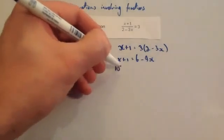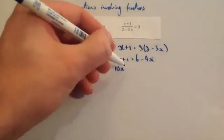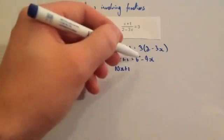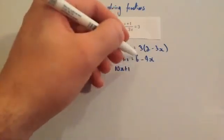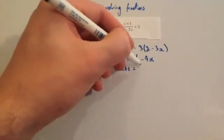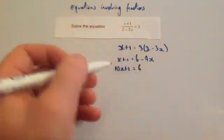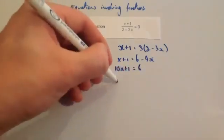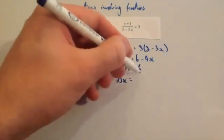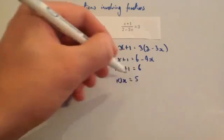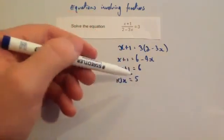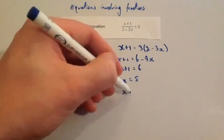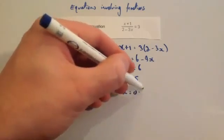You're going to get 10x plus 1 — we've added 9x onto this side, and 9x onto that side, so we're just going to be left with 6. We're then going to take away 1 from both sides to get 10x equals 5, and dividing by 10 — now be careful here — 5 divided by 10 would be 0.5, so you're going to get x equals 0.5.